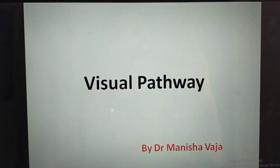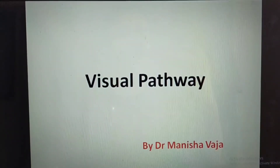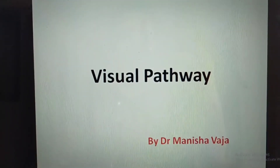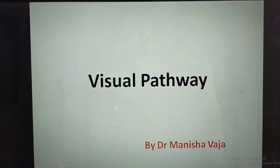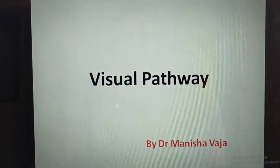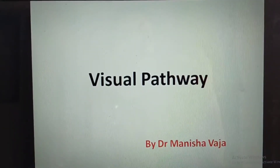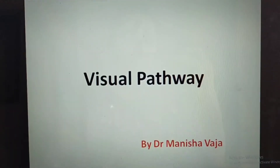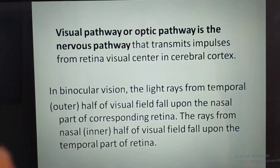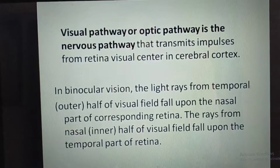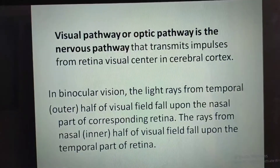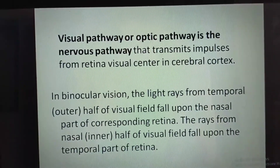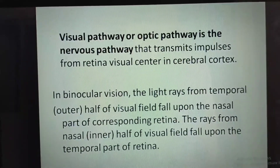Today we are going to talk about our next topic which is visual pathway. It is a part of spatial senses and this question is being asked in five marks, so it is important. Visual pathway, or it is called the optic pathway, is a nervous pathway that transmits impulses from the retina to the visual center in the cerebral cortex.